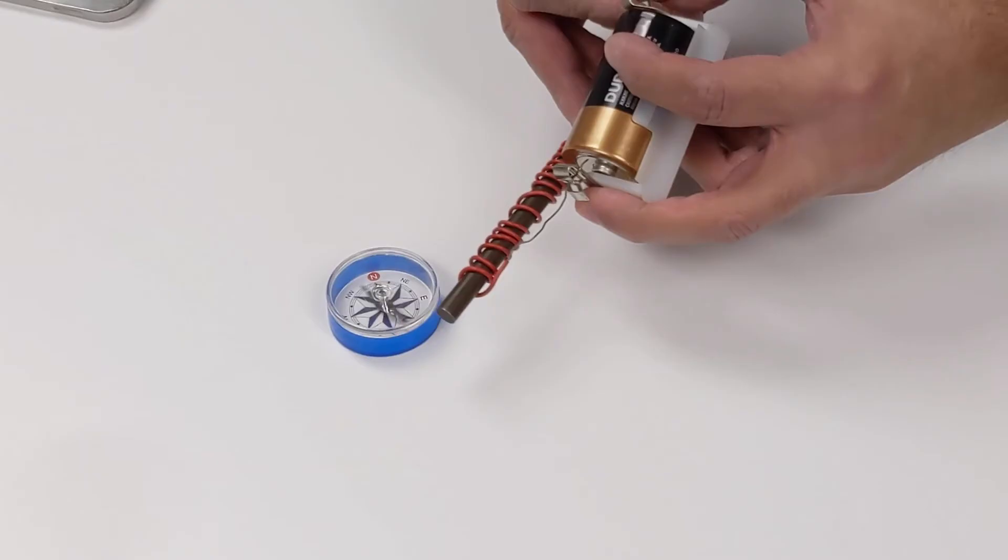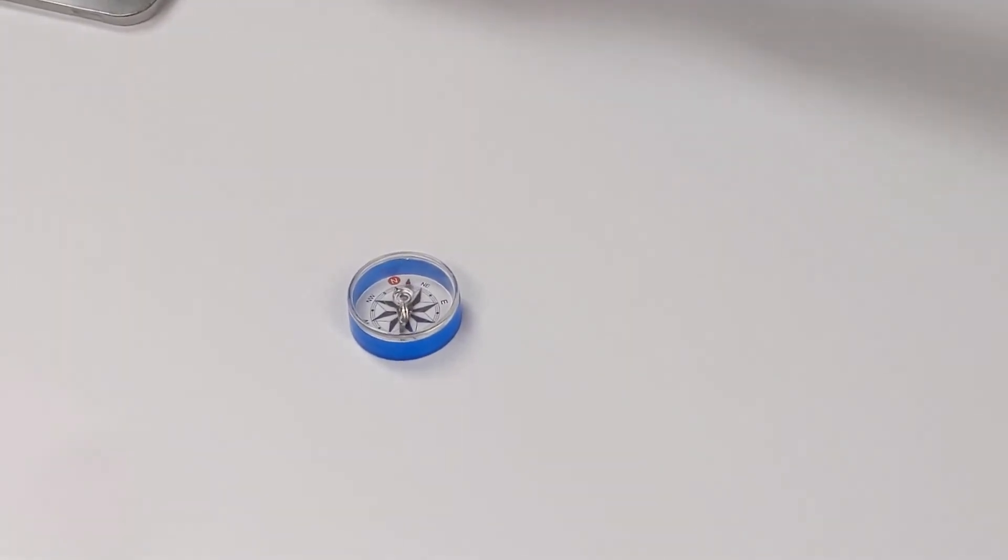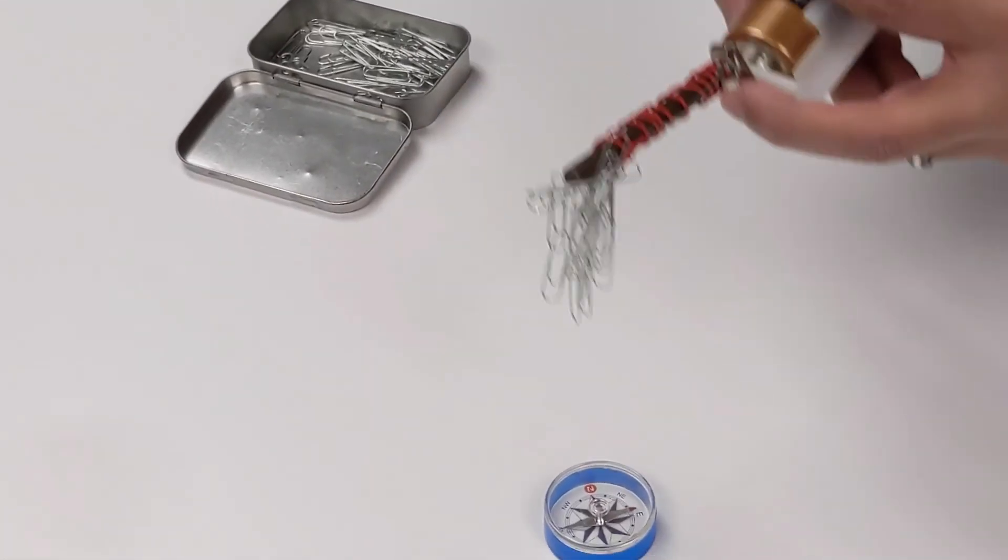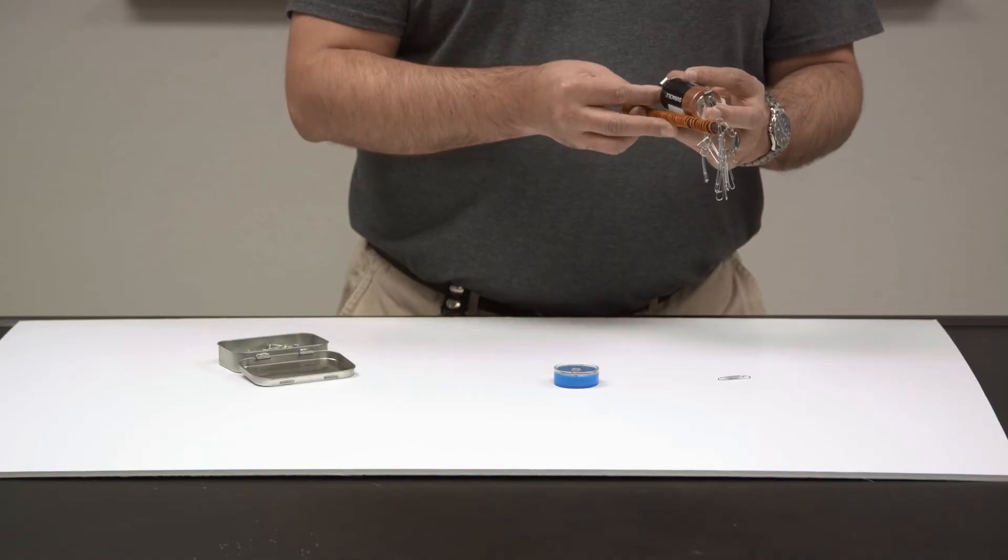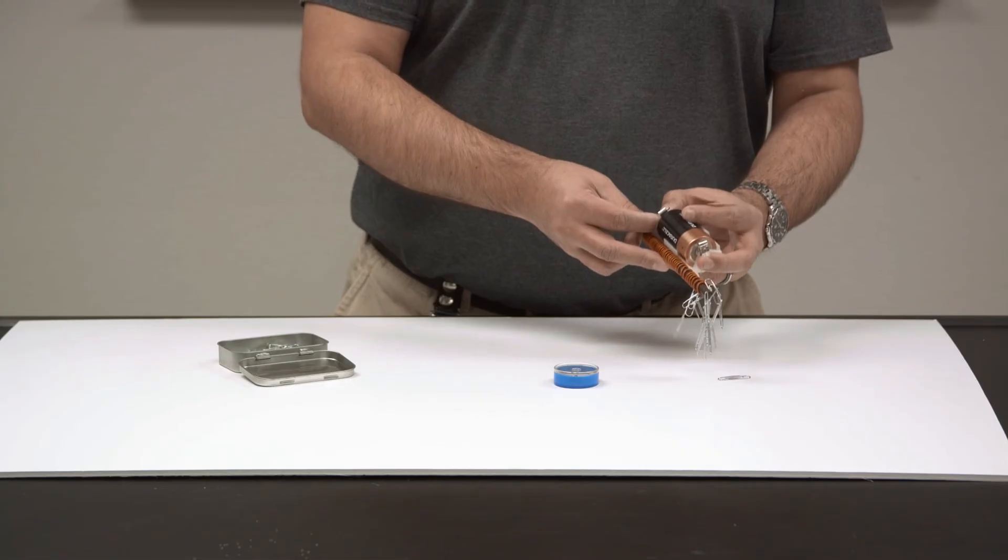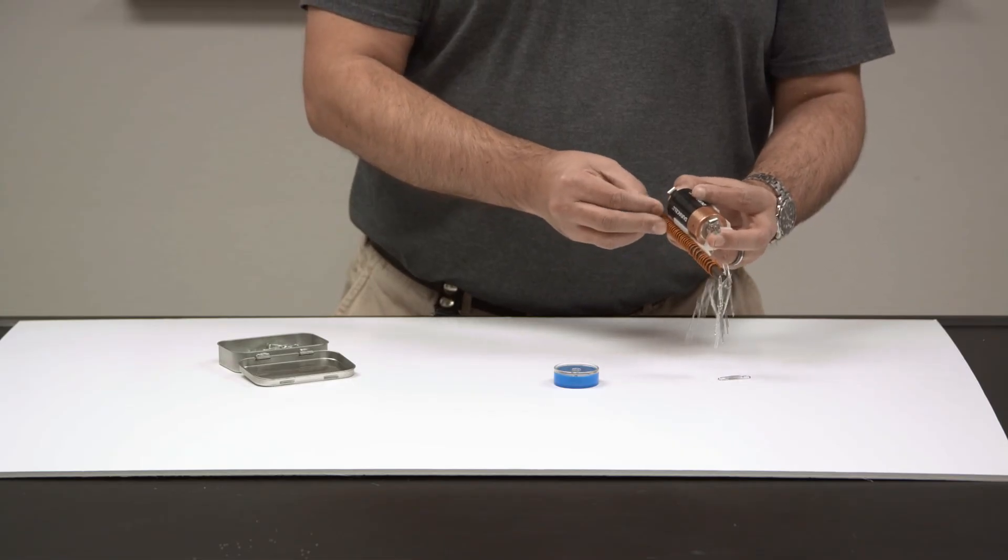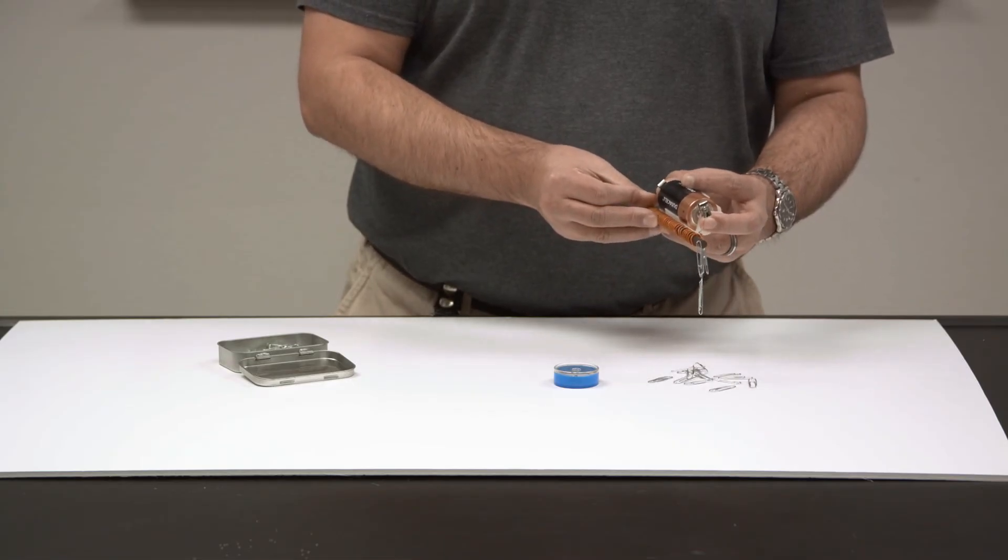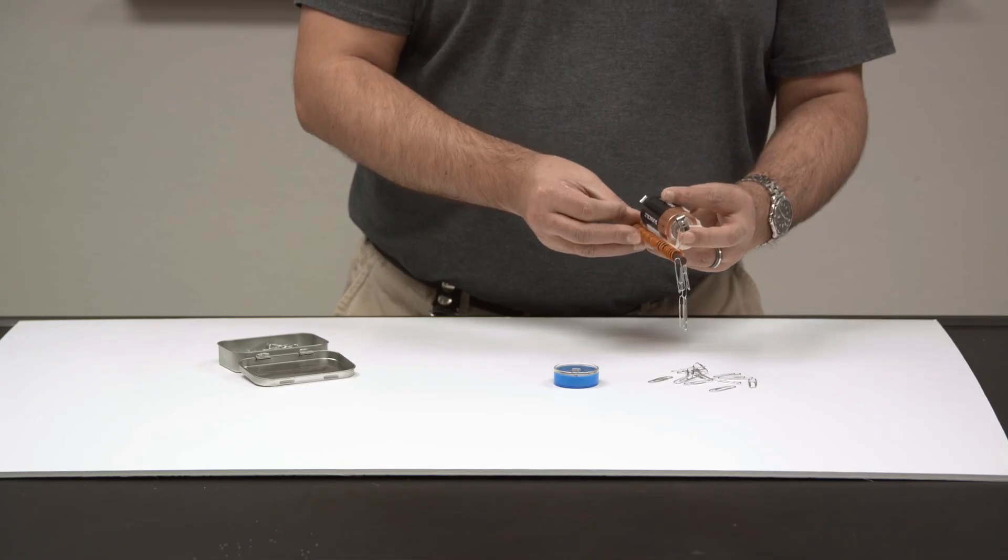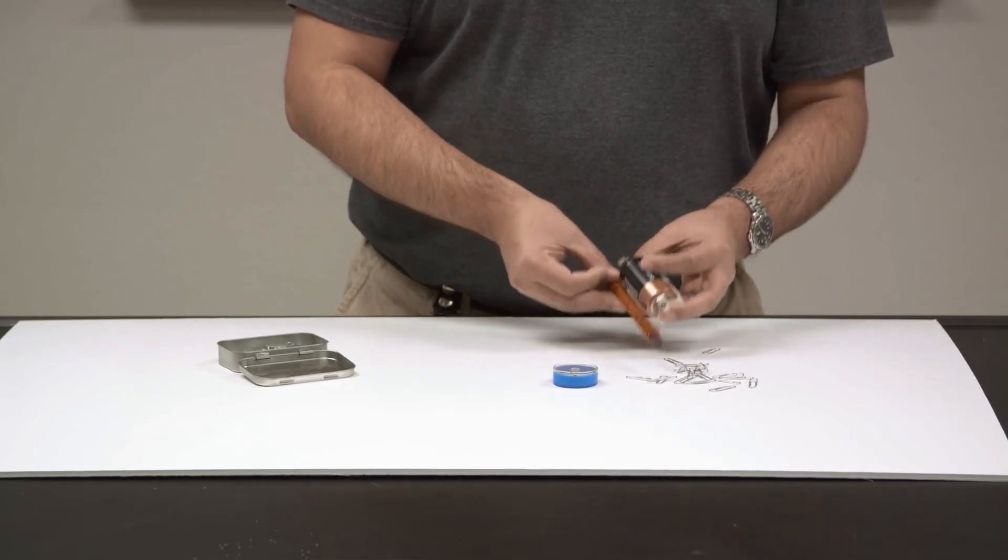And now I can take this electromagnet and attract as much as I want to it. If I disconnect the electricity, the electromagnet will still be temporarily magnetized, and some of the paper clips will actually stay attracted to it until I de-magnetize my electromagnet like this.